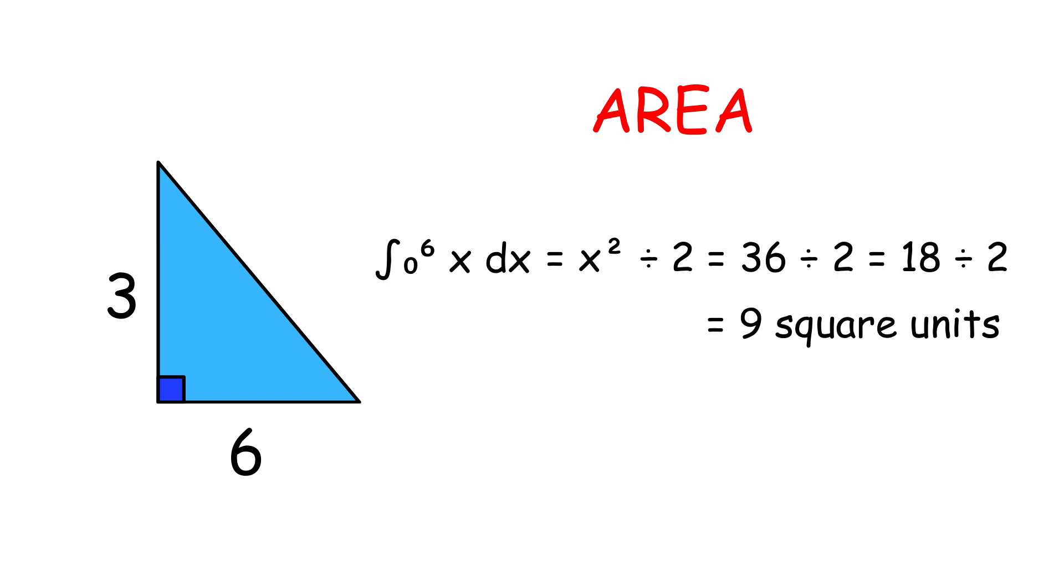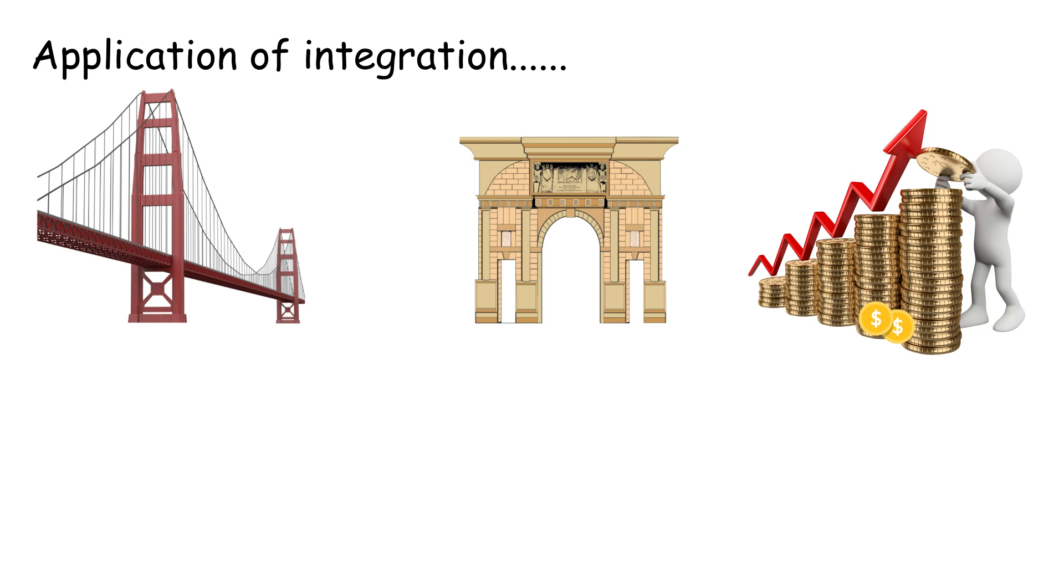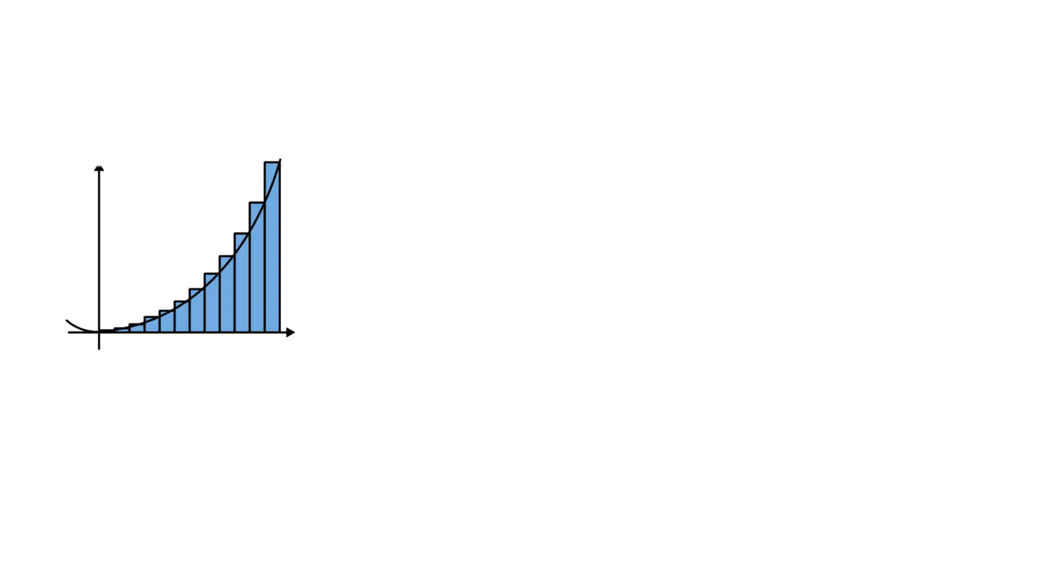So where's this useful? Engineers use integration to design curved bridges and arches. Economists use it to calculate total income over time. And physicists use it to measure distance from speed-time graphs. Integration is simply a way of adding up infinitely thin slices to get the whole picture. See, not so scary after all.